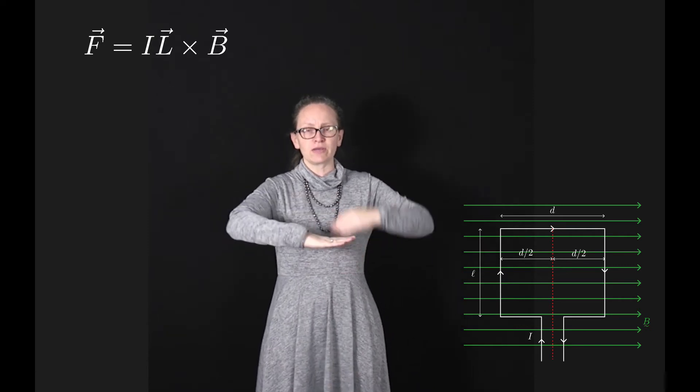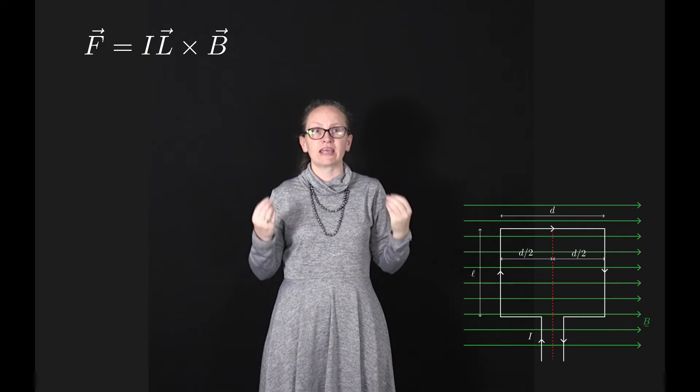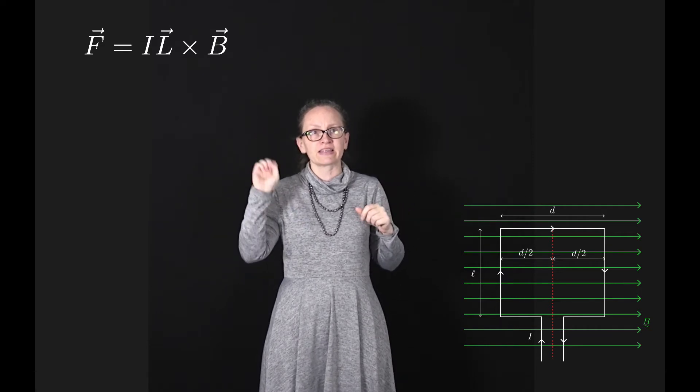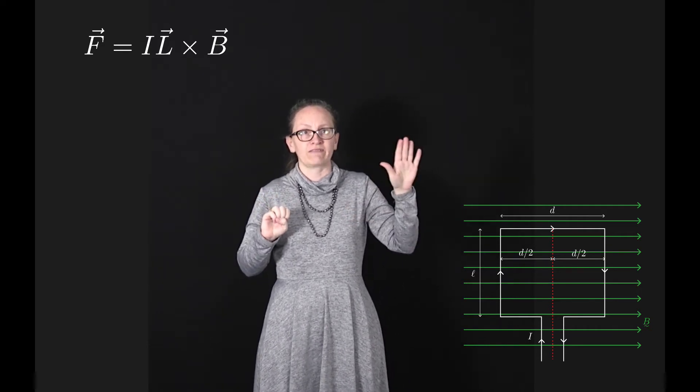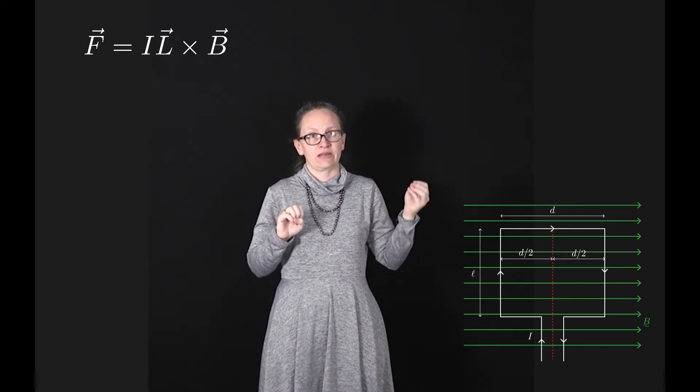The bottom and top sides don't experience any force because for these sides the current and the magnetic field are parallel. So I L cross B equals zero.